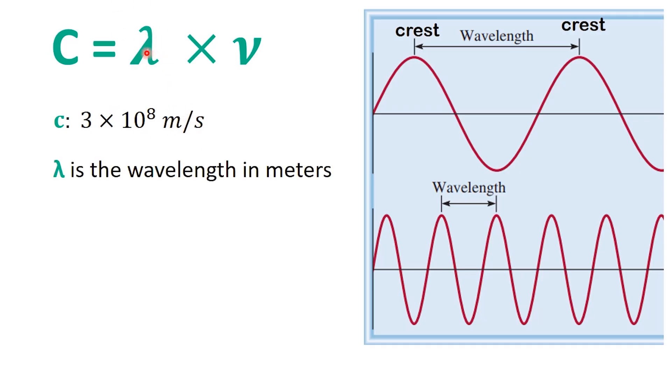Lambda is the wavelength. This is the distance between two identical points on consecutive waves, for example, crest to crest or trough to trough. In simple terms, it's the length of one full wave cycle.